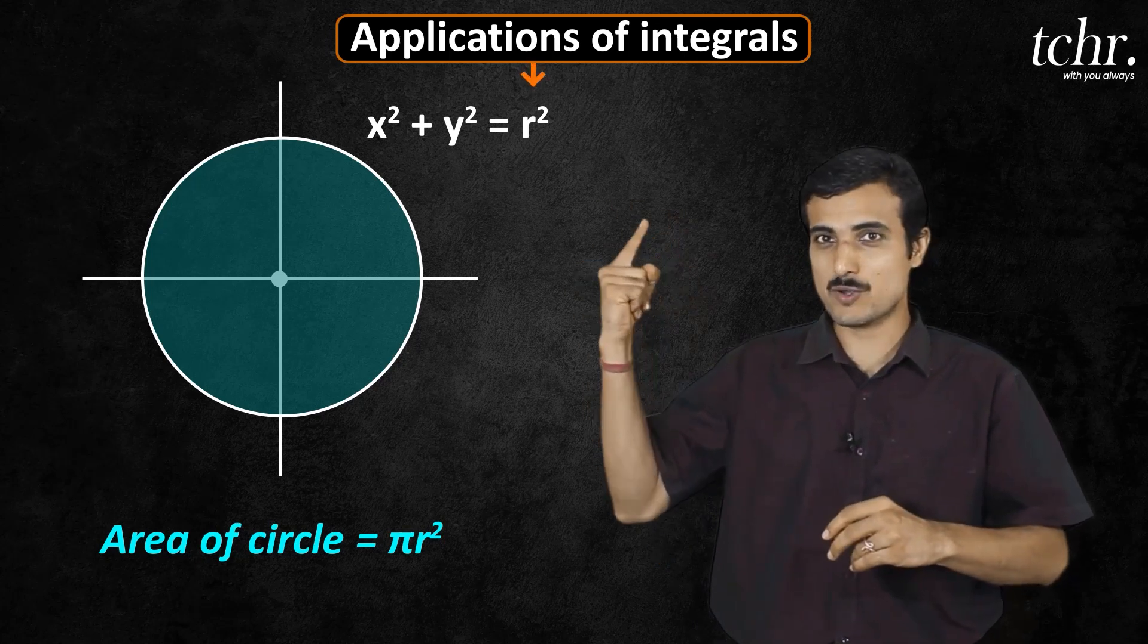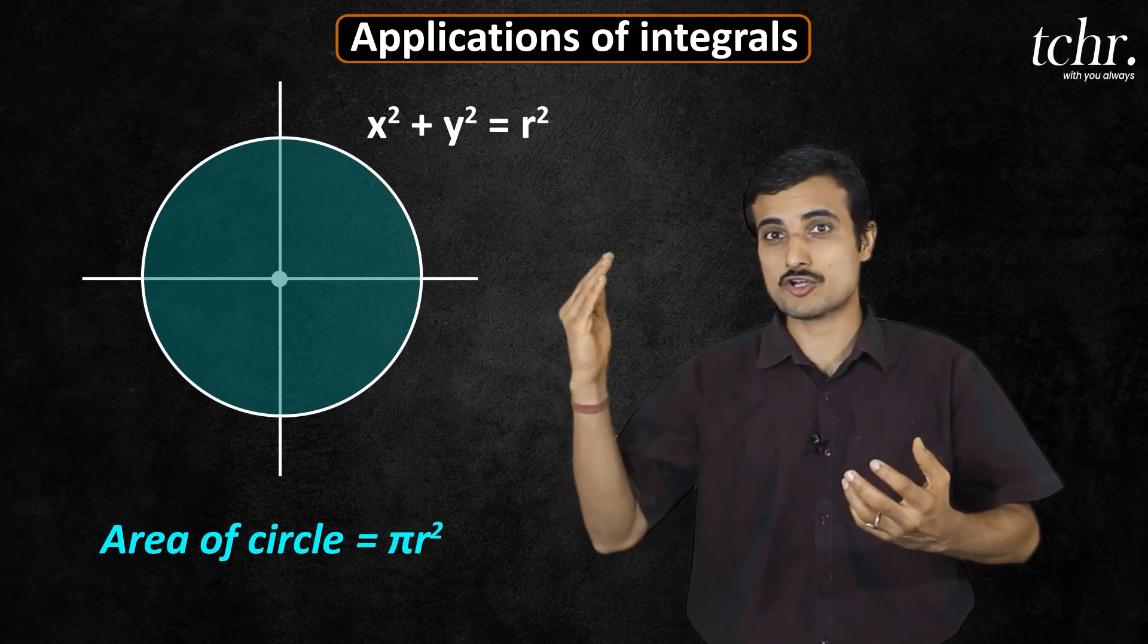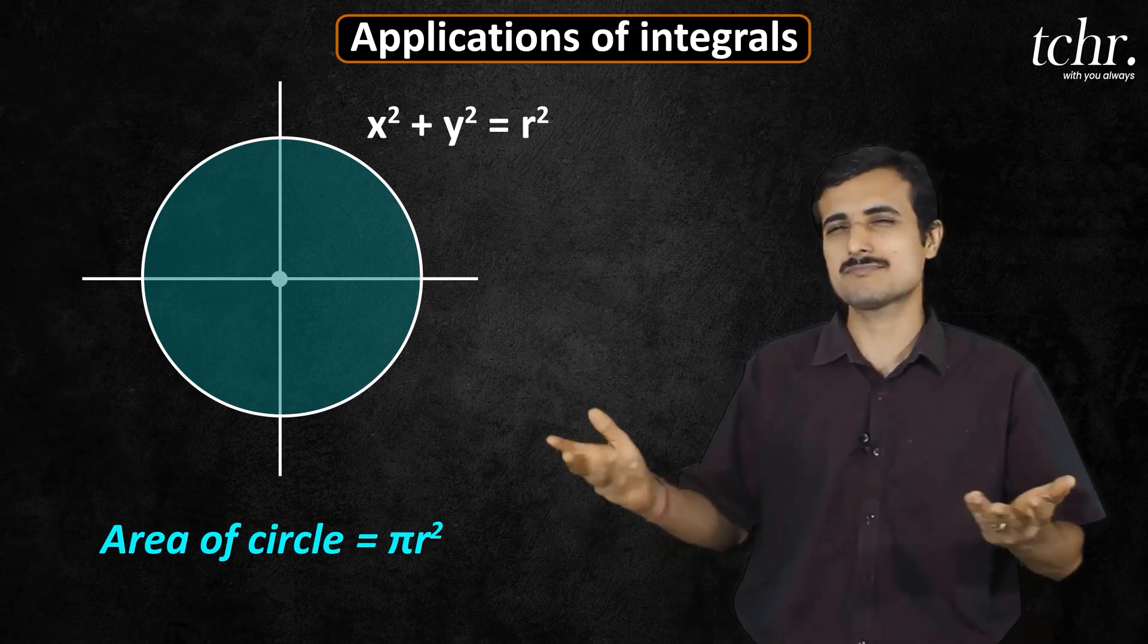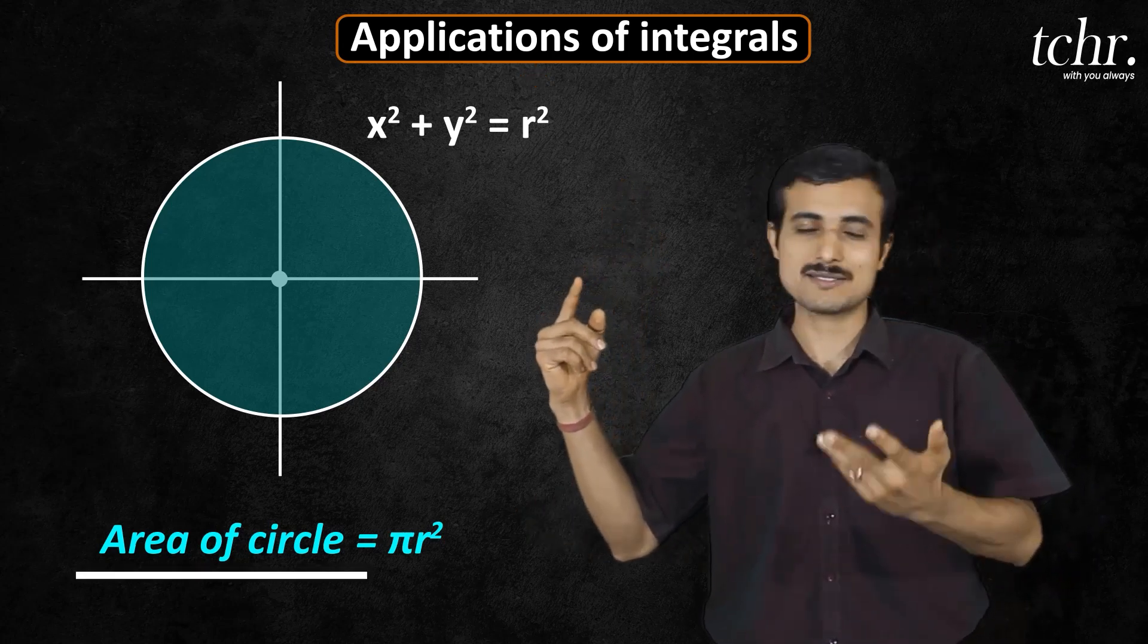Right, so RHS r square is there, integration mode is not available. First quadrant multiplied by 4, you will get the complete area. Simply note down this r square and area is pi r square.